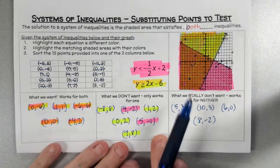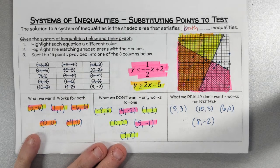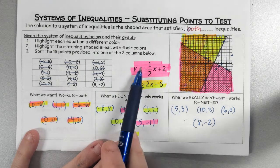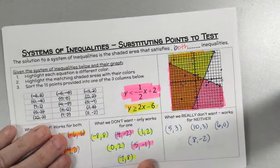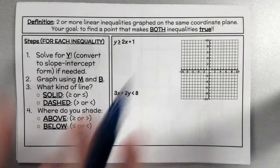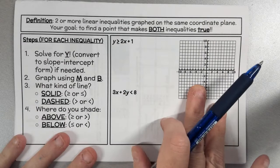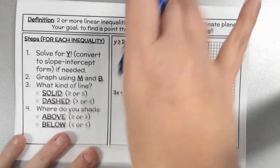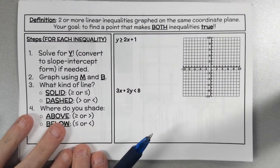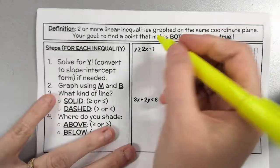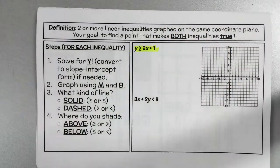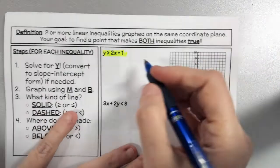Another way to do this is if they don't give you a graph and you don't want to graph it — you can take a point and plug it into both inequalities. I'll show you two different ways on the next page. This time we're going to graph the system ourselves. For this first inequality, we're doing the same thing as before. I'm going to use my yellow highlighter first. The first inequality is y ≥ 2x + 1.